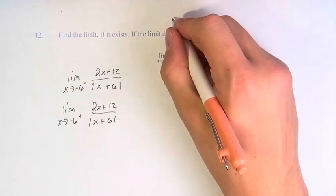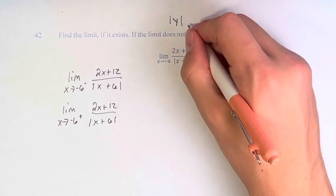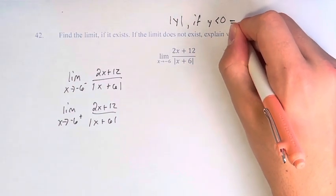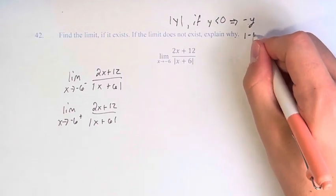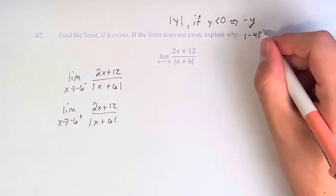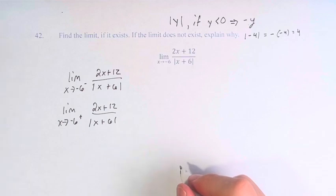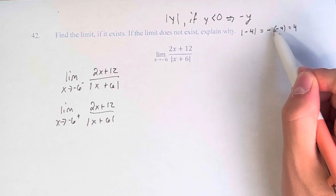And if you're taking the absolute value of a value y, if y is less than 0, this is equal to negative y, right? It's why the absolute value of negative 4 isn't itself. It's negative negative 4 or 4, right? We just normally think of this as just becoming positive, but really we're multiplying it by negative 1.